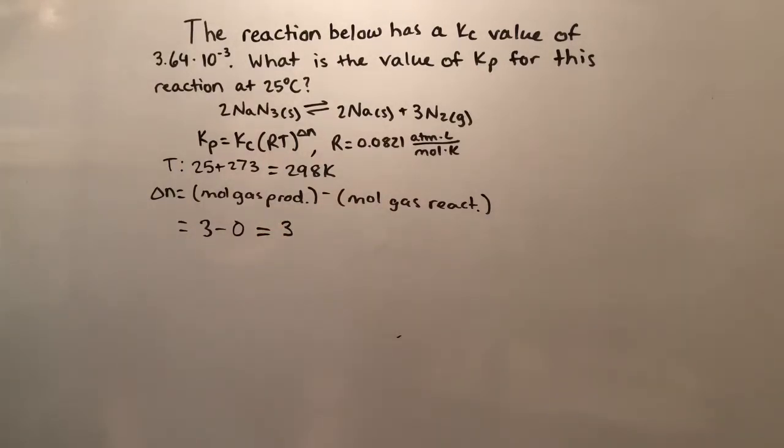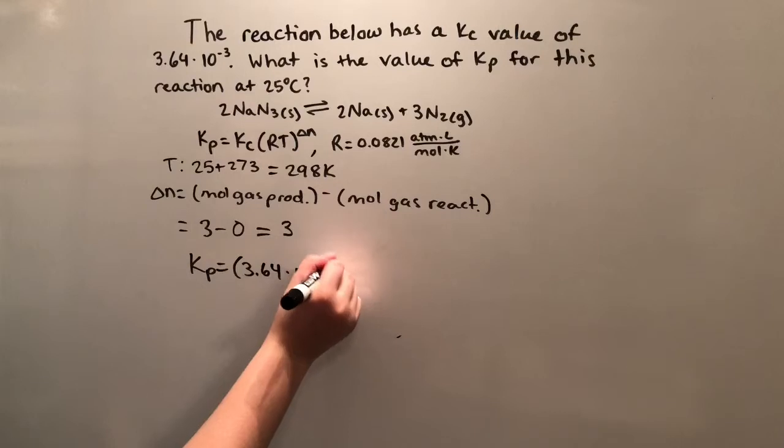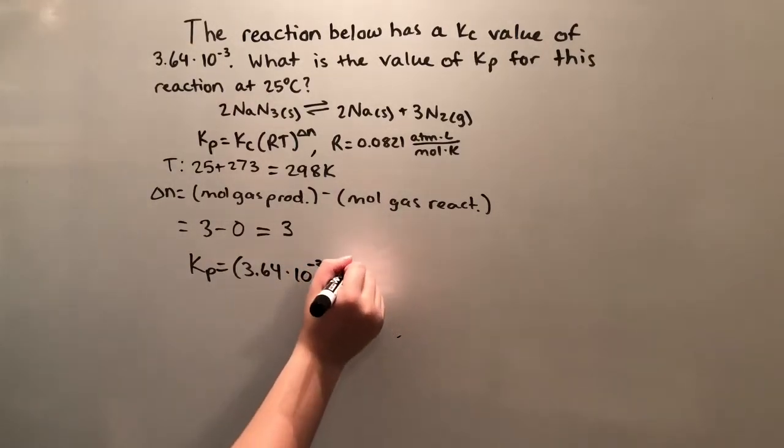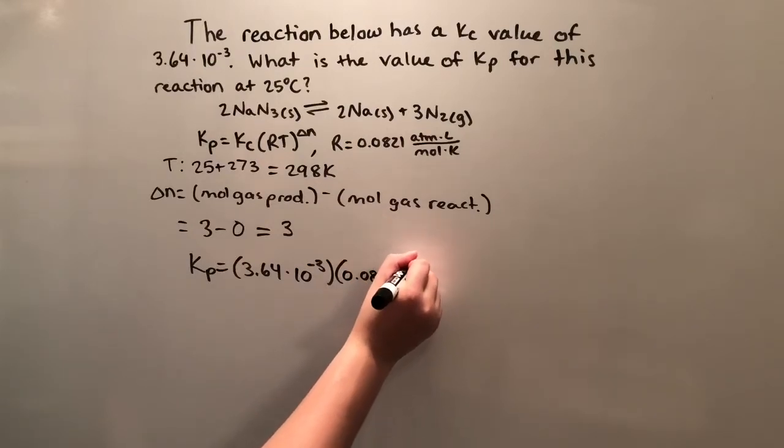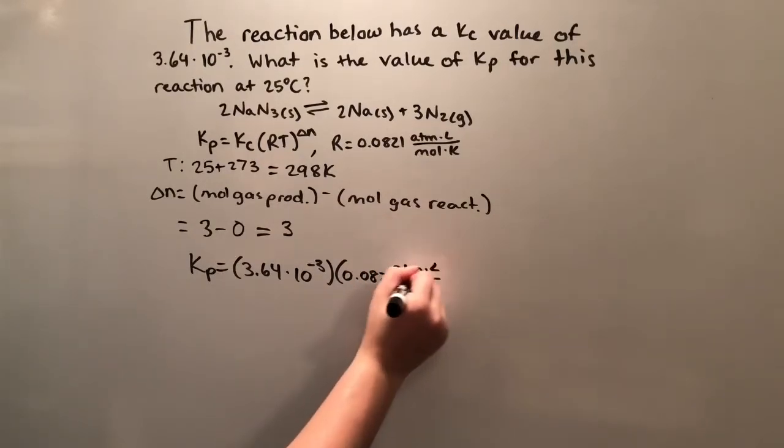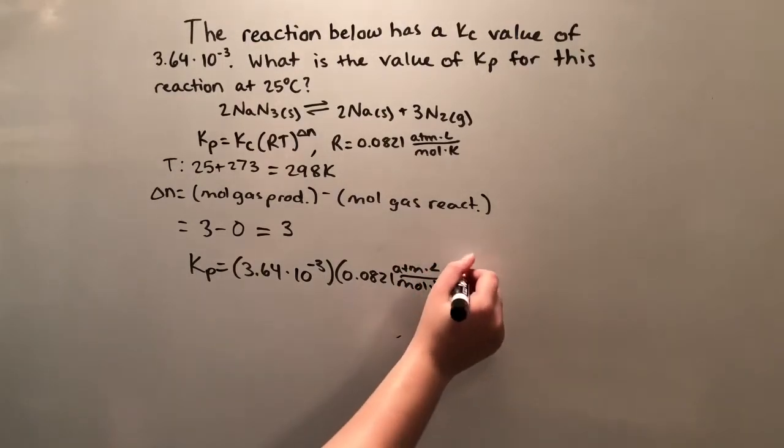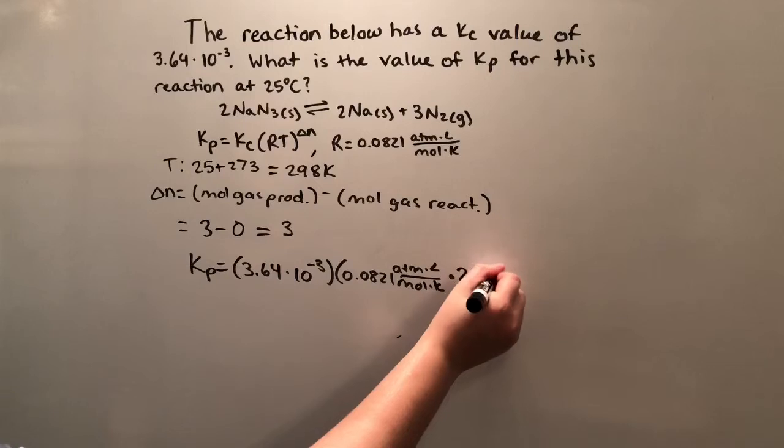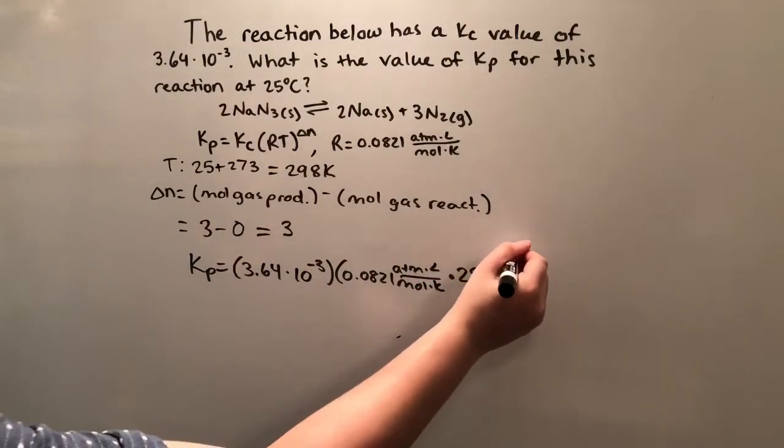So now we have everything we need to find Kp. Kp equals Kc, that's 3.64 times 10 to the negative 3, multiplied by R, 0.0821 atm times liter over mole times Kelvin, multiplied by our temperature, 298 Kelvin, raised to the change in N, which we found was 3.